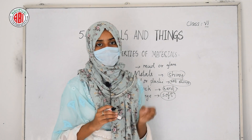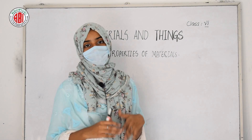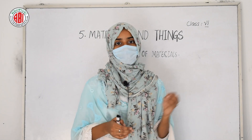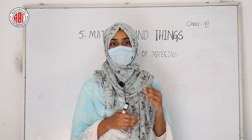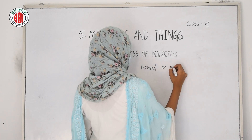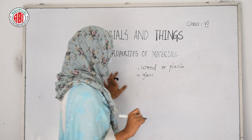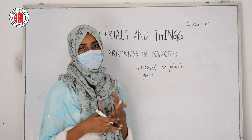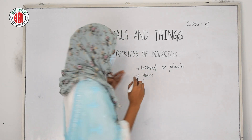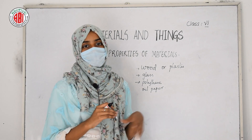Let us talk about other properties of materials. If you want to hide while playing hide-and-seek, you may not hide behind glass because you will be easily visible. If you hide behind wood or a plastic object, you are not visible. But if you hide behind glass, any person can easily see you. Also, if you look at objects through a polythene bag or oily paper, the image will not be clear.